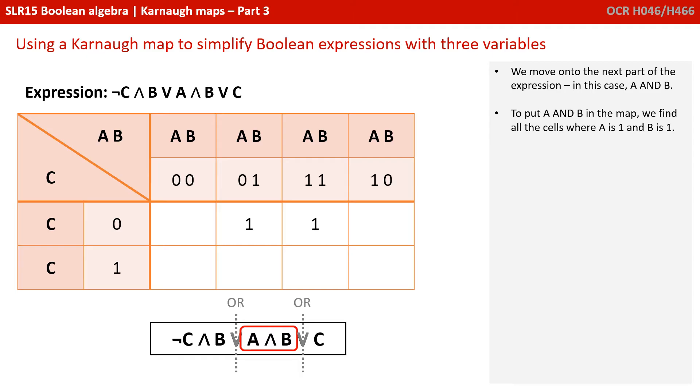We move on to the next part of our expression, A AND B. To put A AND B in the map, we find all the cells where A is 1 and B is 1. There are two locations where this is the case, and we put 1 in these cells.